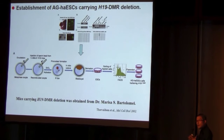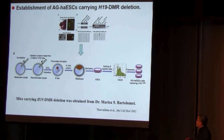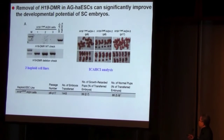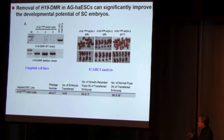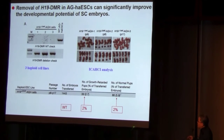So we proposed that if we decrease H19 expression levels in our haploid cells, these cells may support more efficient generation of semi-cloned mice. How to decrease H19 expression is not very difficult — we can simply remove the H19 DMR region. We got mice carrying H19 DMR deletion from Dr. Melissa's lab, and using sperm from these mice we generated haploid cells carrying H19 DMR deletion. By injection of these cells into oocytes, we found the birth rate of semi-cloned mice was about 6% of transferred embryos — three times higher than wild-type haploid cells.